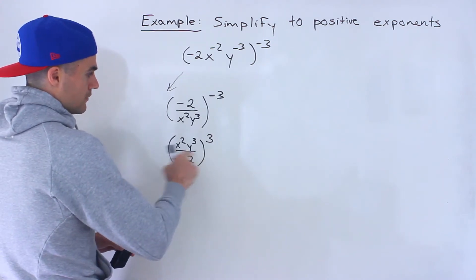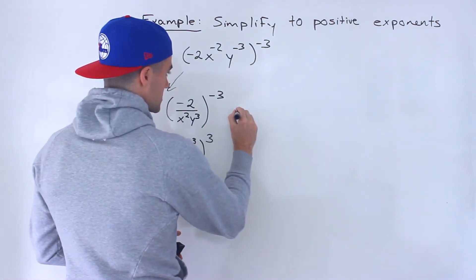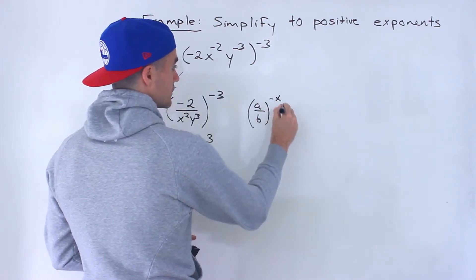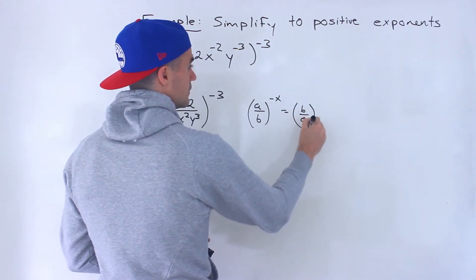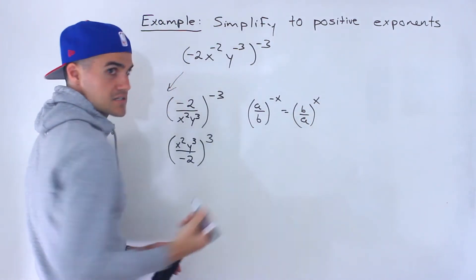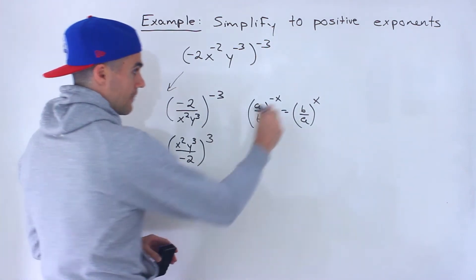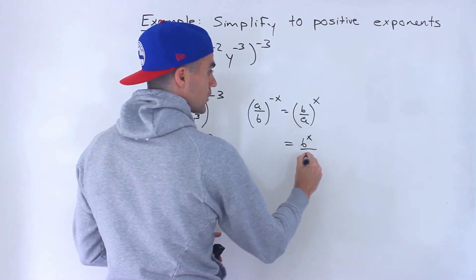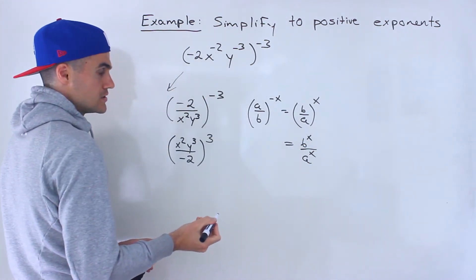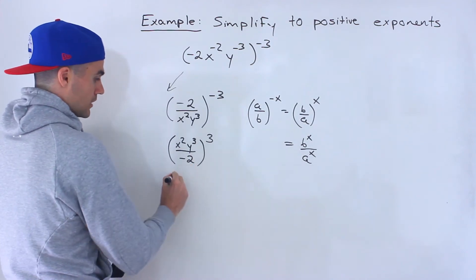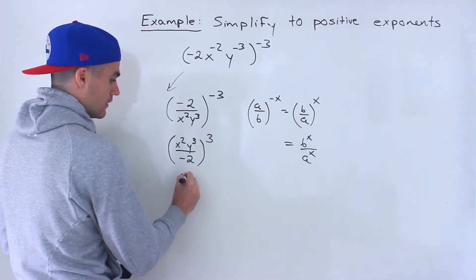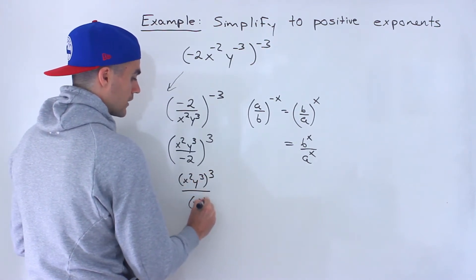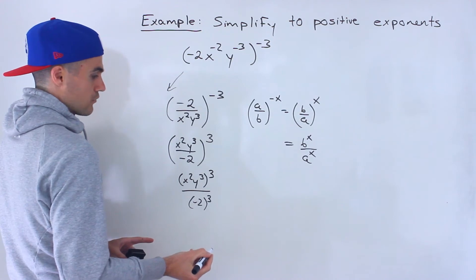Let me mention the rules I'm using here. Whenever you have a fraction to a negative exponent, you can take the fraction, flip it, and the exponent becomes positive. Then the next step is you can take that exponent and distribute it to both the numerator and the denominator.